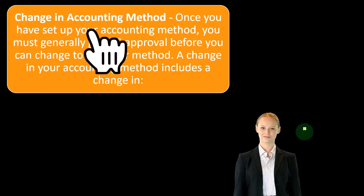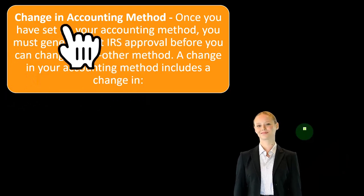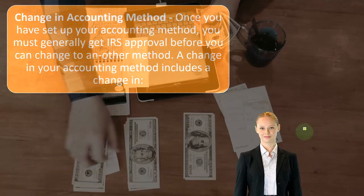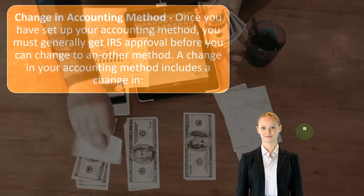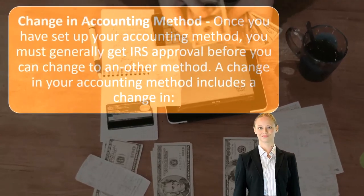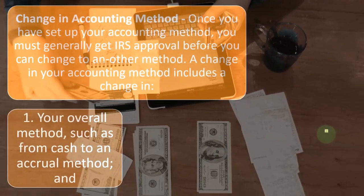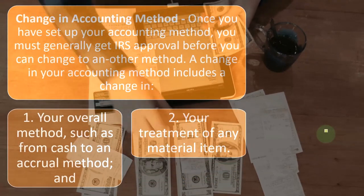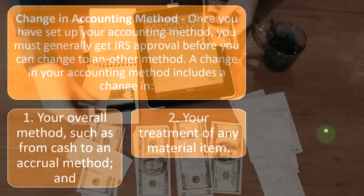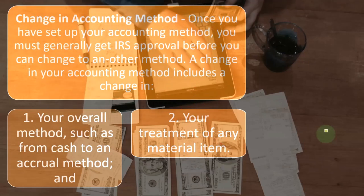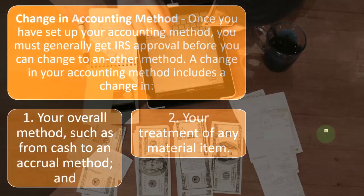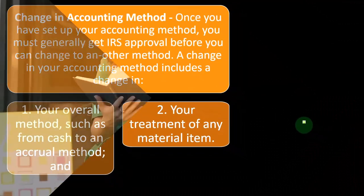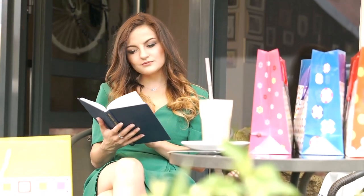So change in accounting method — once you have set up your accounting method, you must generally get IRS approval before you can change to another method. A change in accounting method includes: one, your overall method, such as from cash to accrual; and two, your treatment of any material item. That's why you want to get the accounting method correct the first time, because if you have to change it in the future, the IRS would want some rationale.